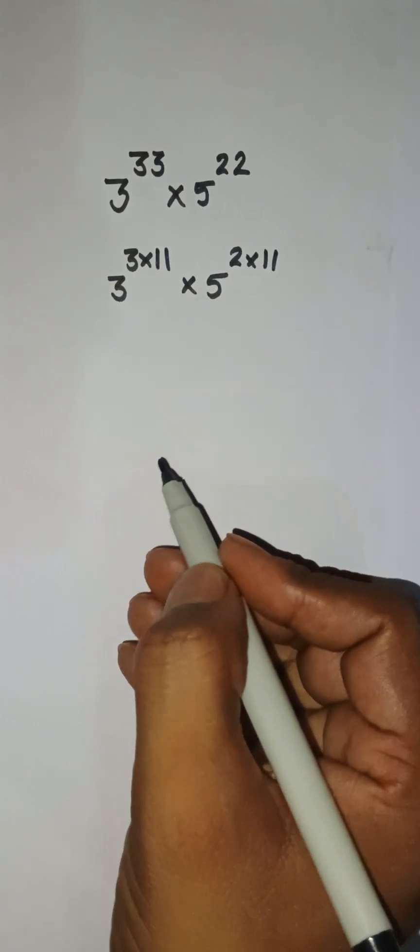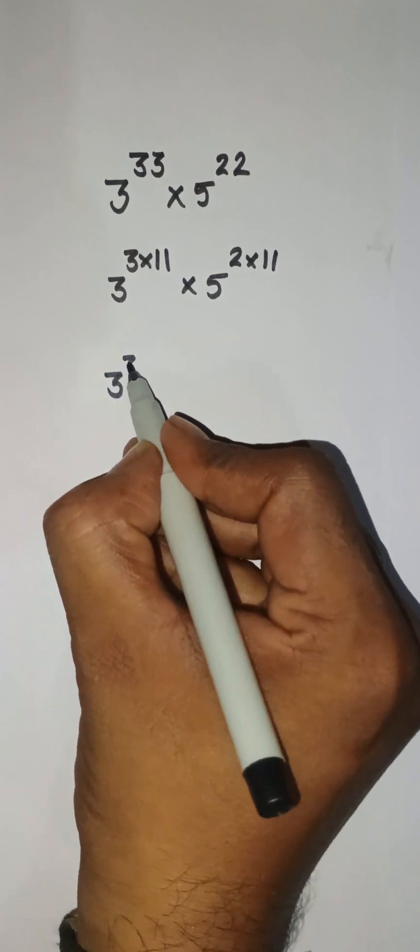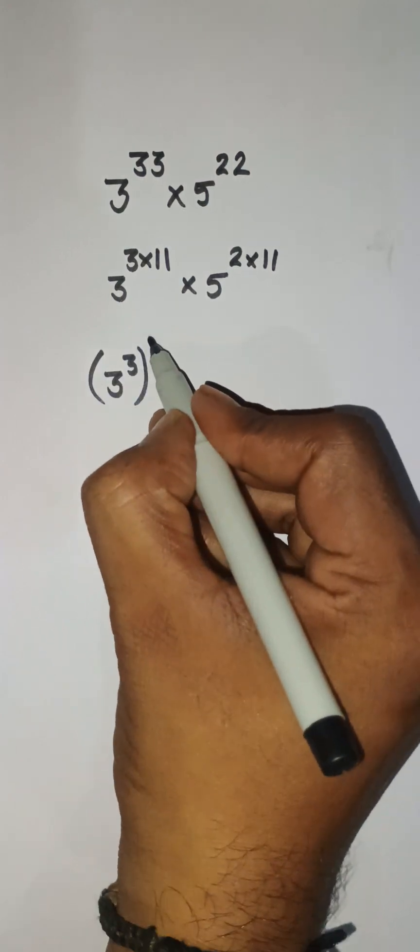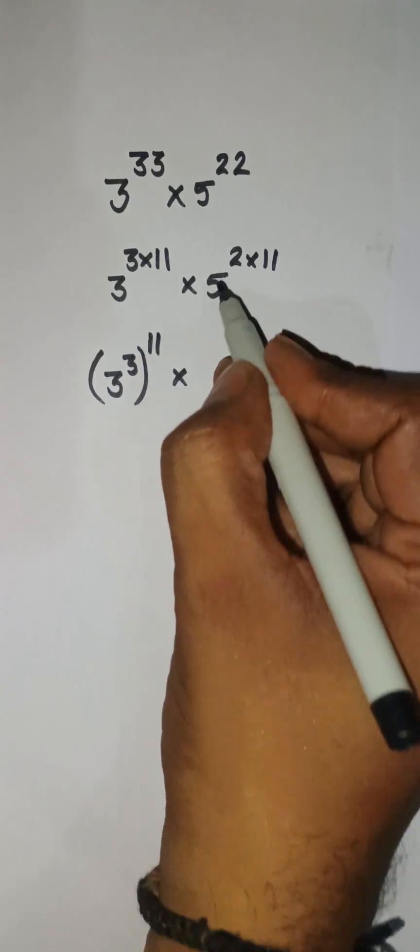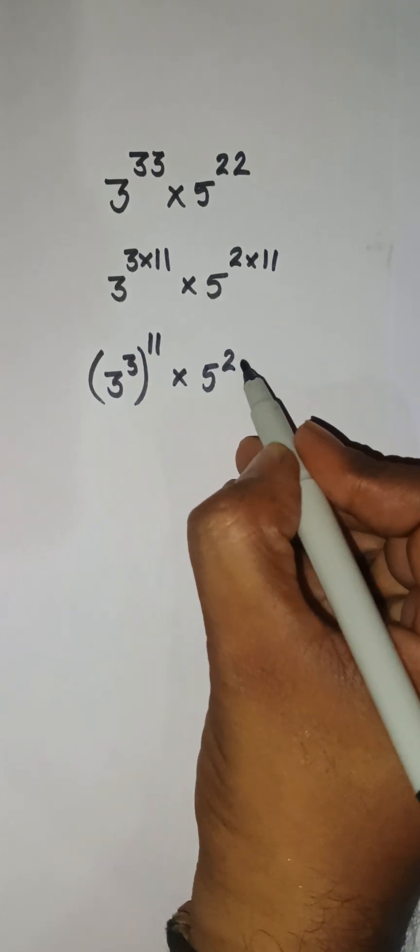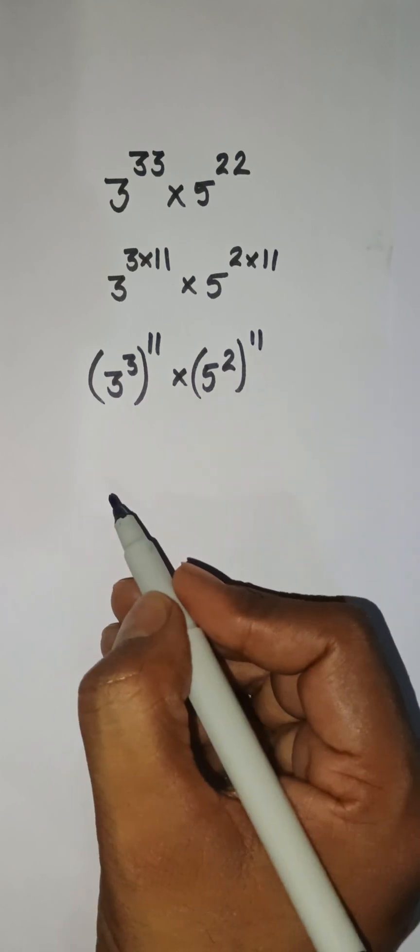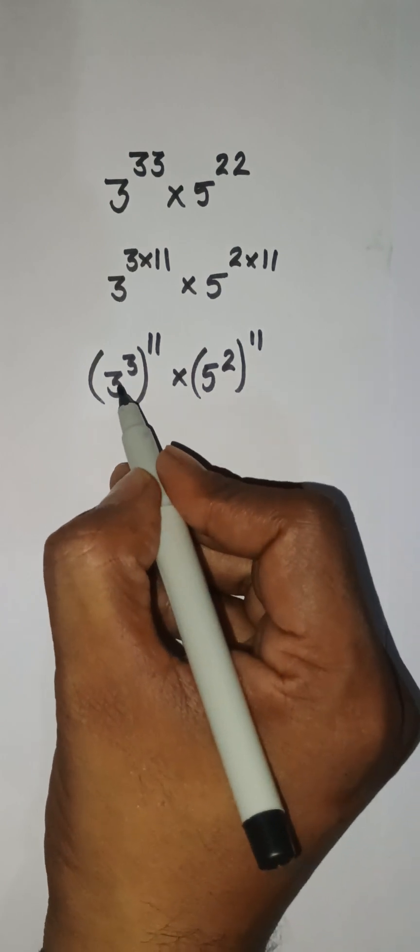Now this can be written as 3 to the power 3, and there is a power raised here: 11. And here, 5 to the power 2, and there is a power raised here: 11.